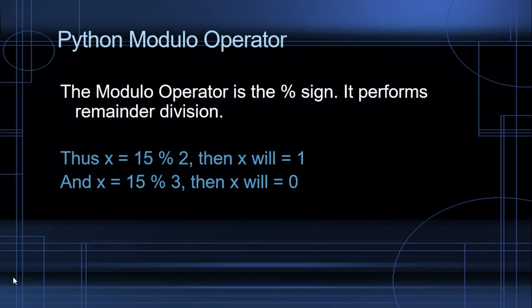The Python modulo operator. The modulo operator is the percent sign. It performs remainder division. Thus, x equals 15 modulo 2, and since 2 goes into 15 7 times, which is 14, so 15 minus 14 is 1, then we have a remainder of 1. If we increment our value and divide it again, so x equals 15 modulo 3, well, 3 actually goes into 15 5 times, and so we have a remainder of 0.